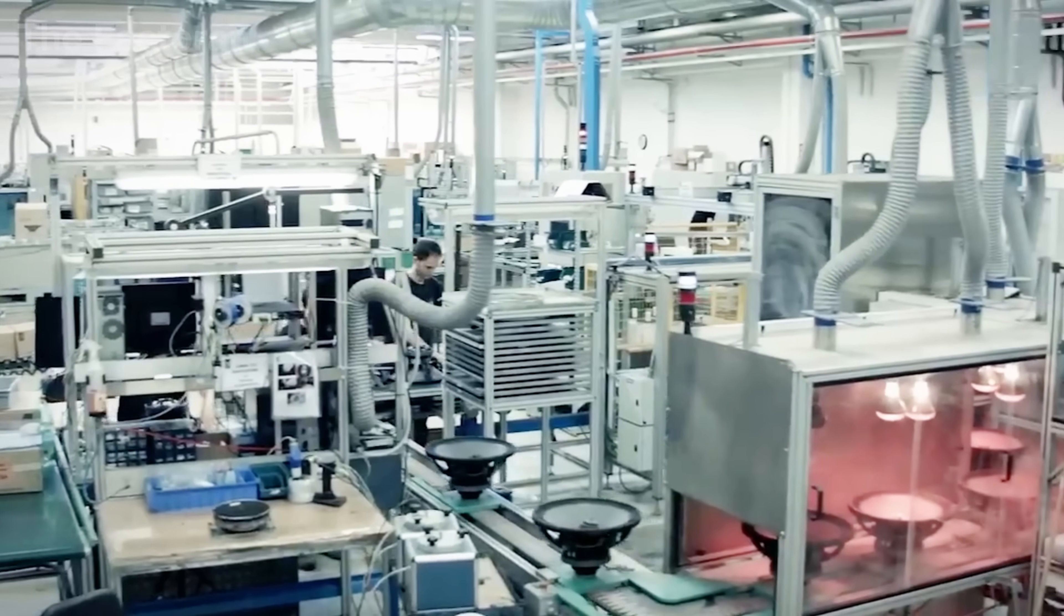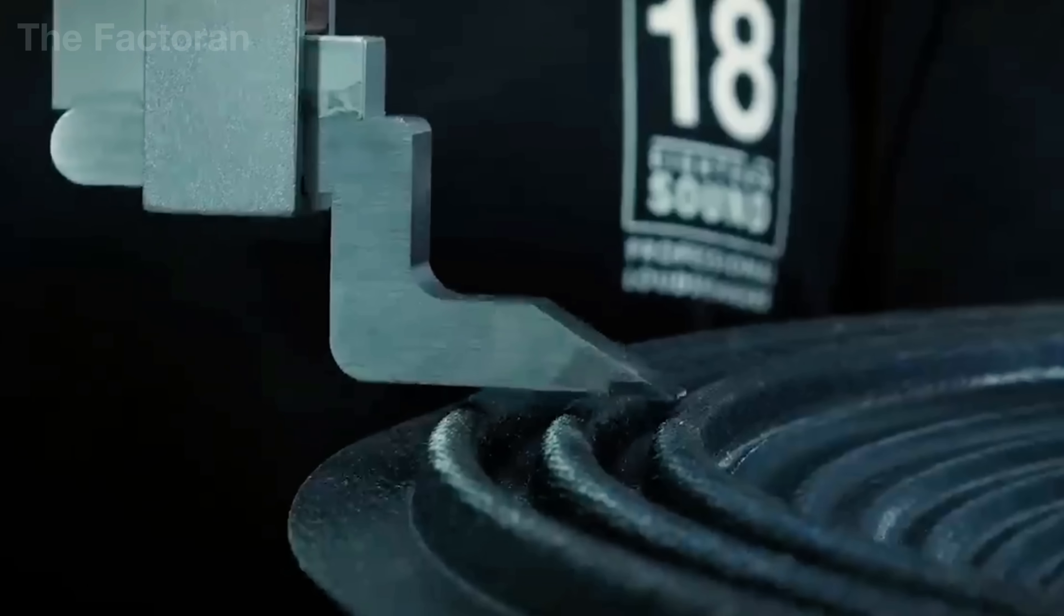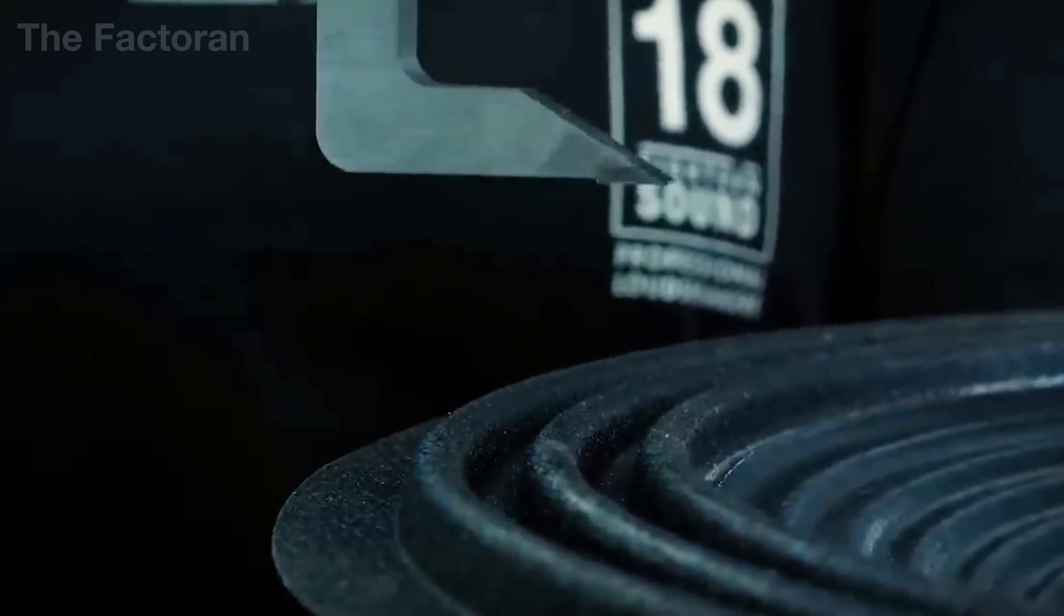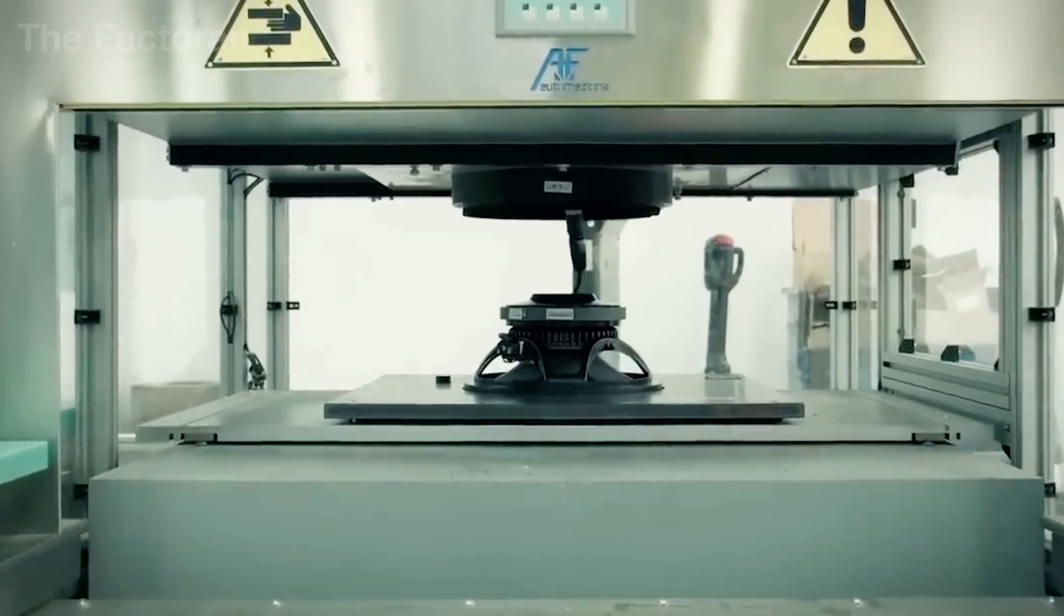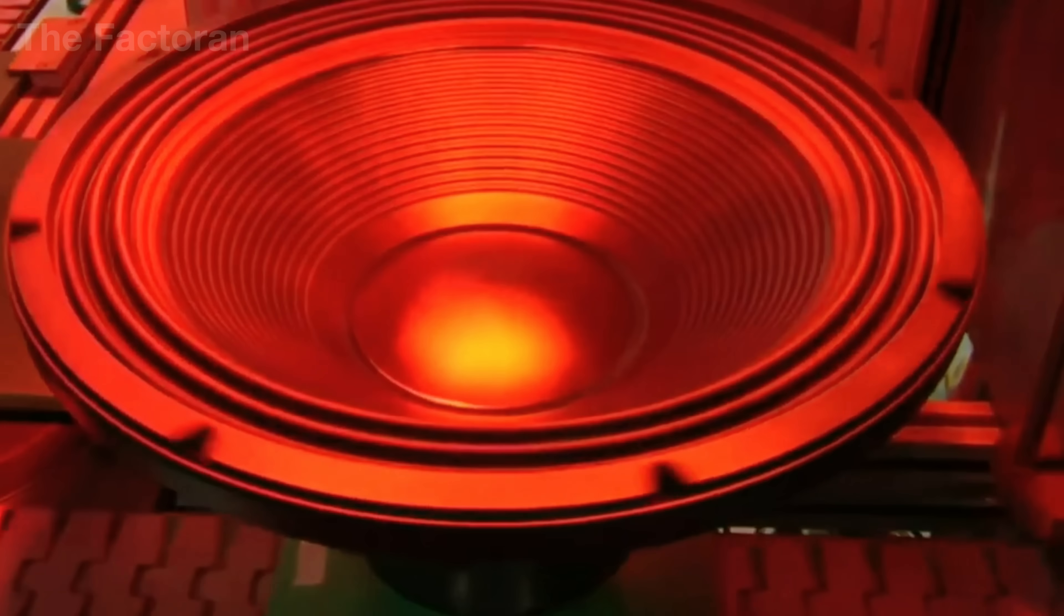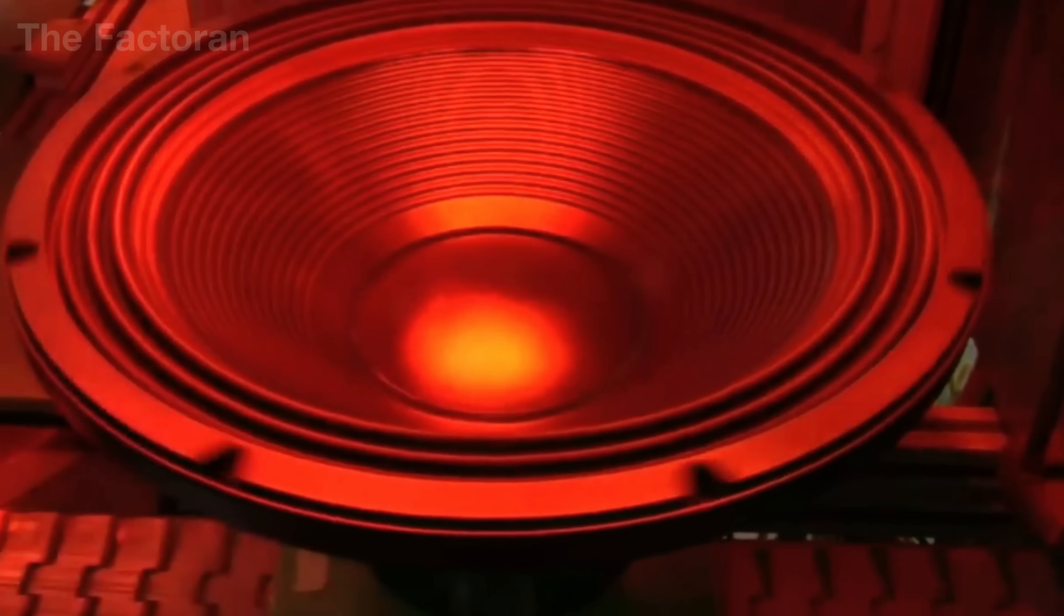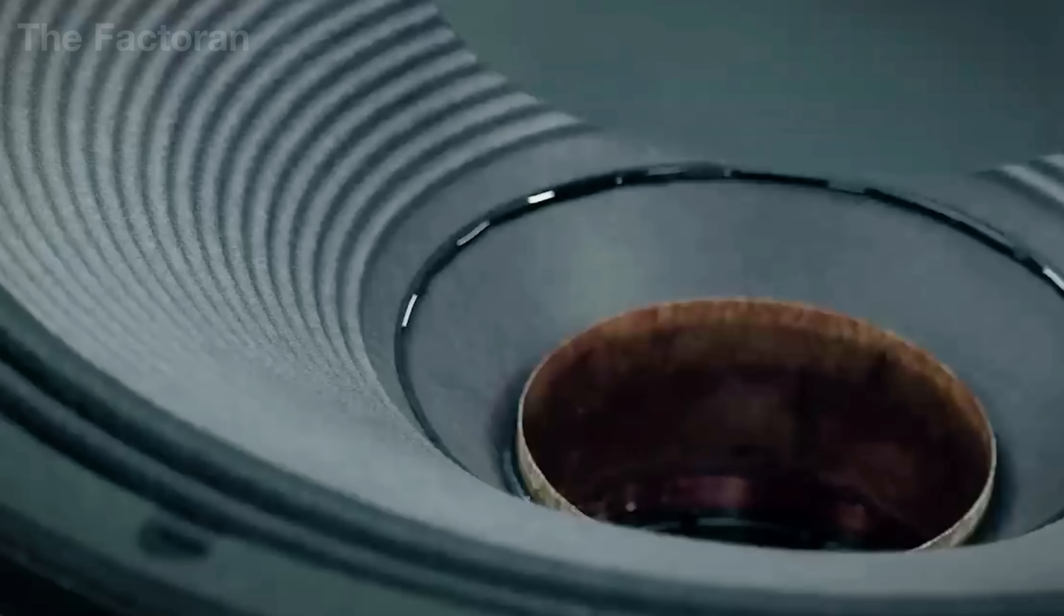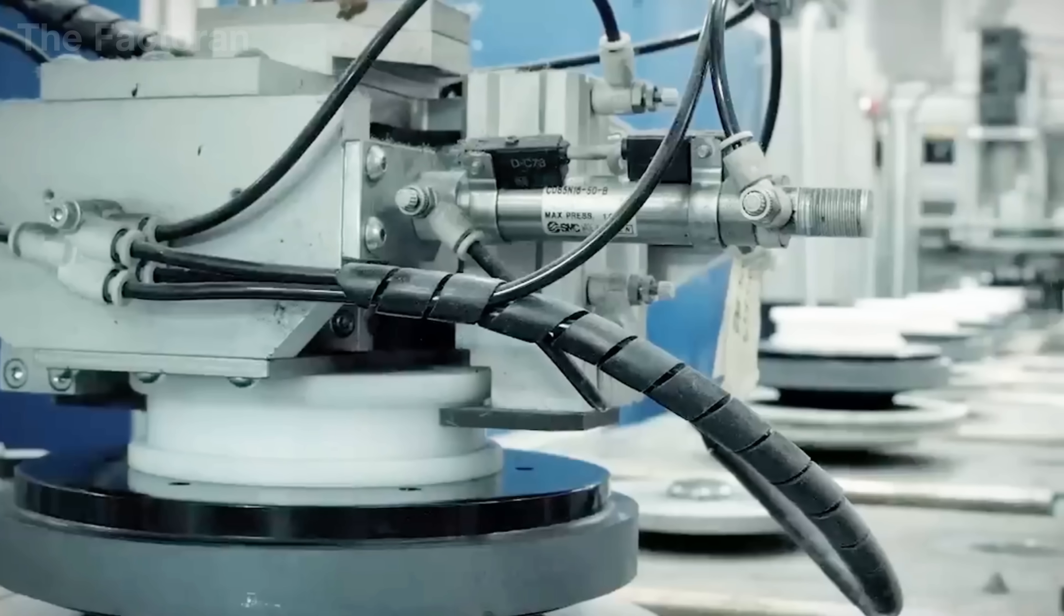Once the voice coil and diaphragm have been securely bonded, the assembly is immediately placed into a specialized curing chamber for anywhere from 20 minutes to several hours. This stage allows the heat-resistant adhesive to fully harden, locking every component in place and forming a stable mechanical structure while still preserving the diaphragm's natural flexibility for sound reproduction.